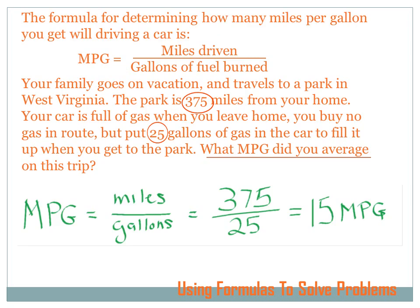I hope you got this one. First, whenever we have a word problem, it's real smart to CUCC. Circle, underline, count, and check. I'm going to circle the numbers in this problem. If it's a math problem, chances are real good that the numbers are going to be needed for the solution. So, your family goes on a vacation and travels to a park in West Virginia. The park is 375 miles, circle, from your home. Your car is full of gas when you leave your home. You buy no gas en route, but put 25 gallons of gas in the car to fill it up when you get to the park. Oops, looks like the question. What miles per gallon did you average?